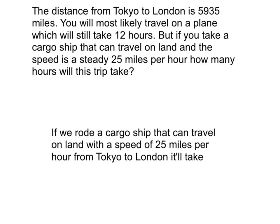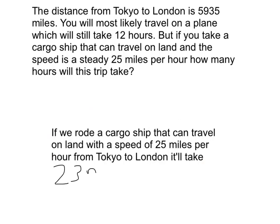For our conclusion, I'll re-read the question: the distance from Tokyo to London is 5935 miles. You'll most likely travel on a plane which takes 12 hours, but if you take a cargo ship that can travel on land with a speed of a steady 25 miles per hour, how many hours will this trip take? We know that 5935 divided by 25 is 237 and 2/5, so that means if we rode a cargo ship from Tokyo to London at 25 miles per hour, it will take 237 and 2/5 hours. Thank you for watching.